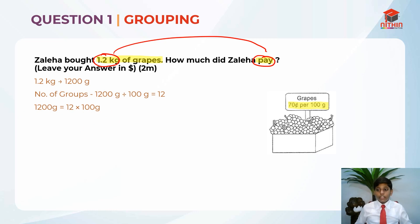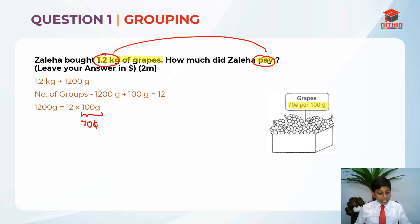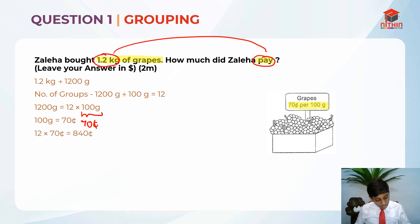To find the cost of 1,200 grams — which is also equal to 1.2 kilograms — we know that 100 grams costs 70 cents. So we take 12 times 70 cents, because 100 grams equals 70 cents. We get 840 cents.